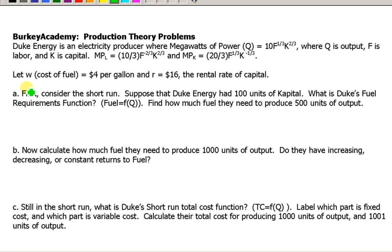Let's look at the short run. We're assuming here fuel is a variable input and capital is a fixed input in the short run. Let's see what kind of decisions we can make and how we solve for these. So let's suppose to start with that the cost of fuel is $4, the rental rate on capital is $16 per unit, and in the short run Duke has 100 units of capital.